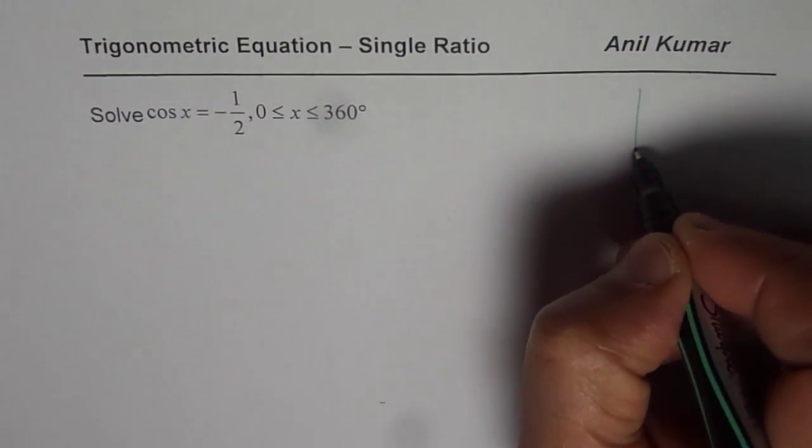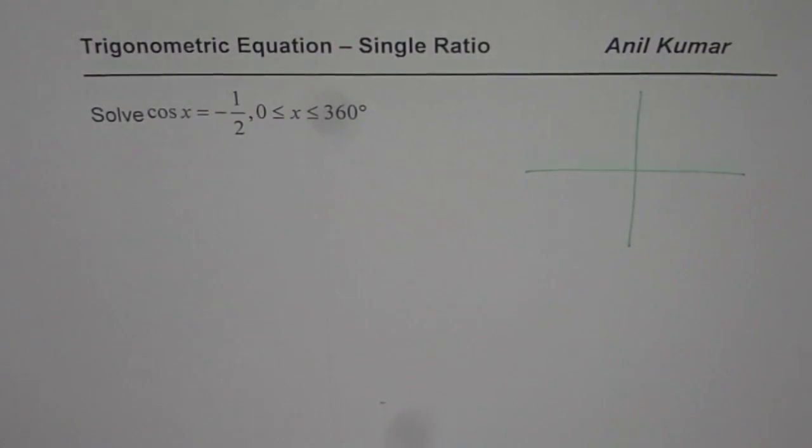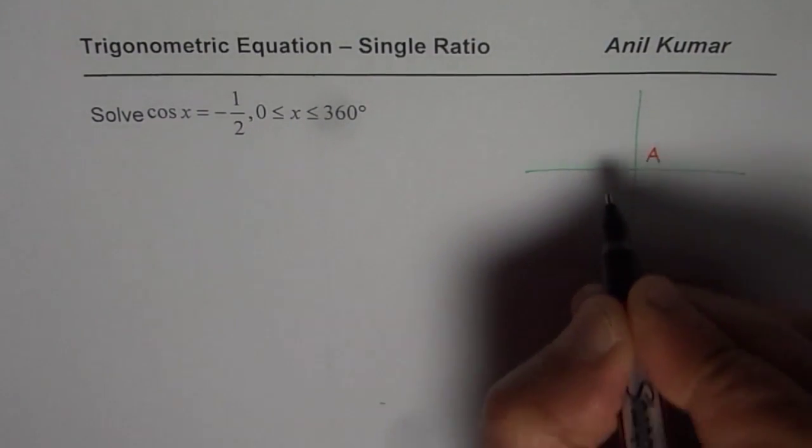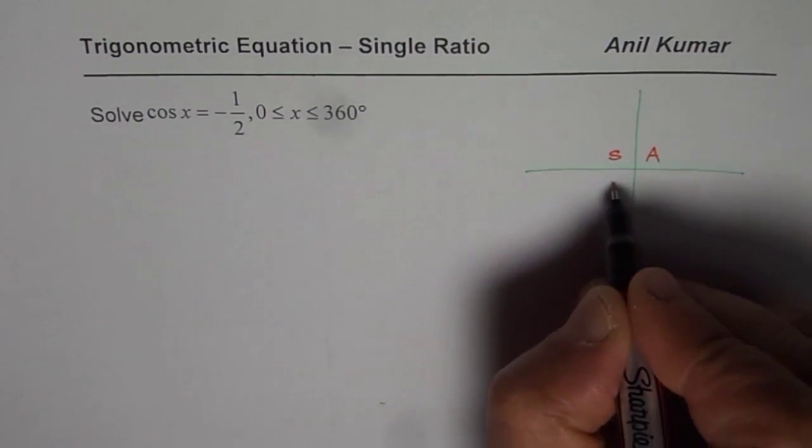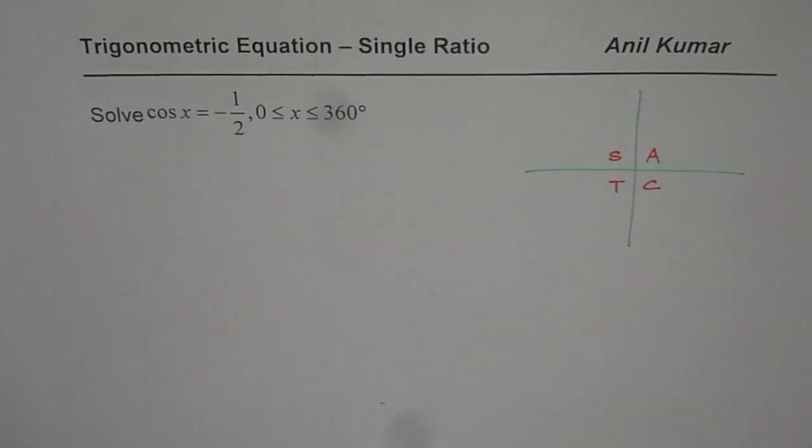Let us begin by understanding in which quadrant cos is positive and in which quadrant cos is negative. We know in quadrant 1 all are positive, in quadrant 2 sine is positive, then tan is positive in 3, cos is positive in quadrant 4.